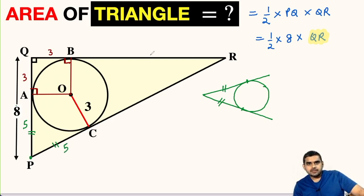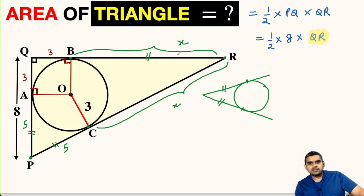Likewise, R is an external point and from here we have two tangents, RB and RC, which are tangents at points B and C respectively. So if this distance is assumed as x, this distance will also be automatically x, because according to this theorem, the BR length will be equal to CR.